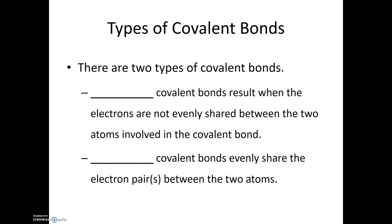So there are two types of covalent bonds, and again it goes back to that tug-of-war analogy — either the electrons will be shared evenly, or they won't. Polar covalent bonds result when the electrons are not shared evenly between the two atoms, where the tug-of-war is uneven and the electrons spend more time around one atom. Conversely, non-polar covalent bonds evenly share the electron pairs between the two atoms.